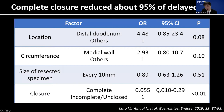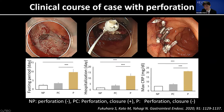In multivariate analysis, we identified predictors of delayed adverse events in duodenal ESD, and found that complete closure decreased delayed adverse events by approximately 95%, independent of lesion location, size, and circumference. Furthermore, even when we encountered a large perforation during the procedure, if we closed not only the perforation site but the full mucosal defect, the fasting period, hospitalization period, and maximum CRP level were not different from patients without perforation. So it is important to close the mucosal defect.